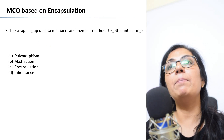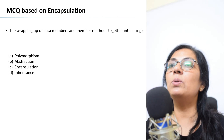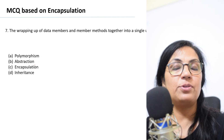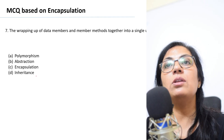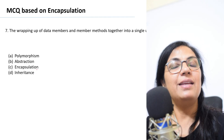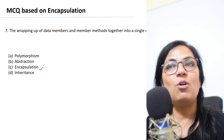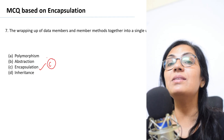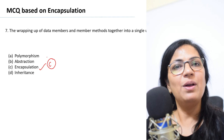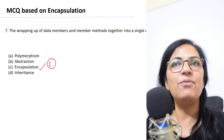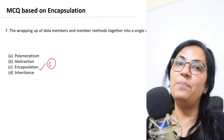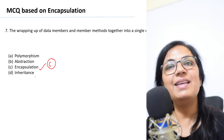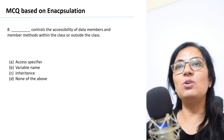Question number seven: The wrapping up of data members and member methods together into a single unit is called — polymorphism, abstraction, encapsulation, or inheritance? It is encapsulation. All of you have learned this definition. Even if you don't know the meaning, you have learned the definition of all these object-oriented principles. Encapsulation is the correct answer.